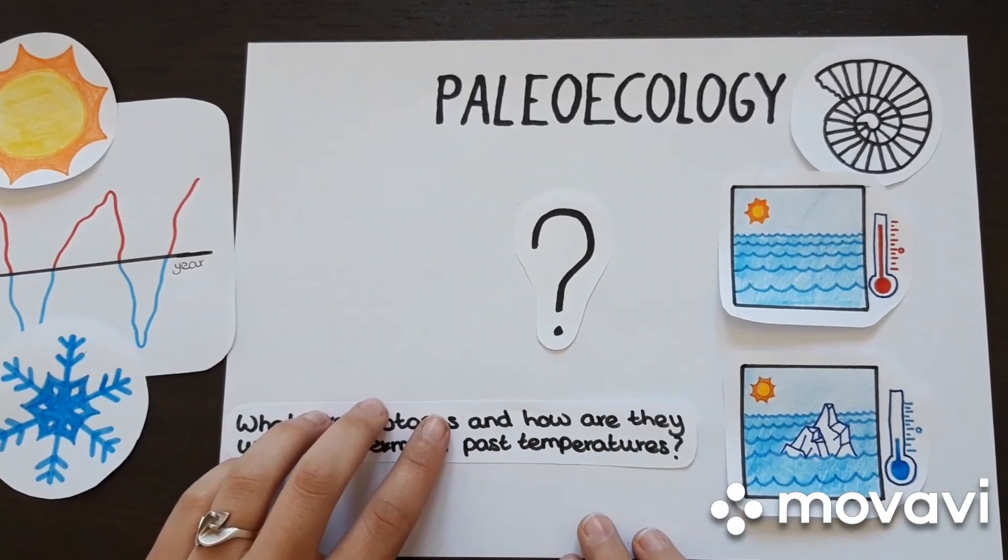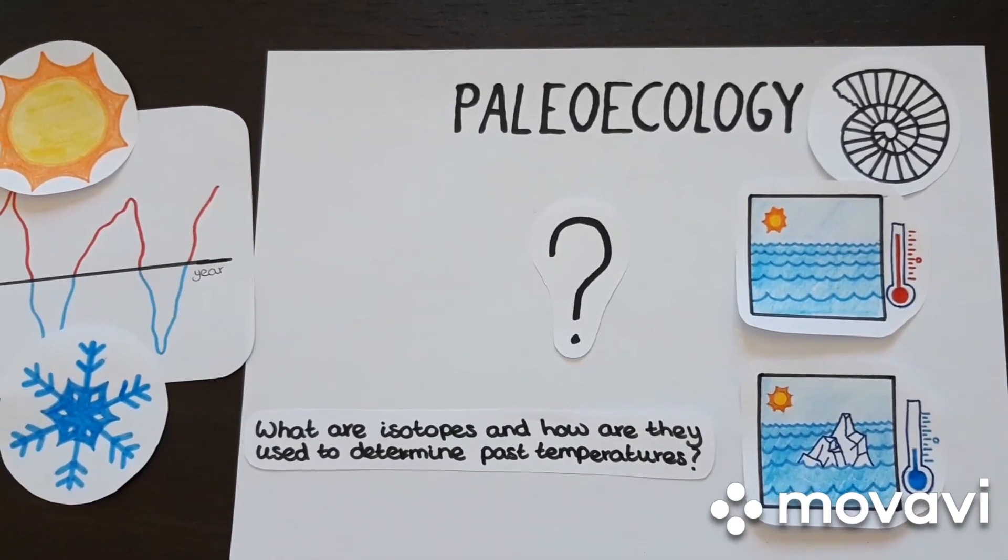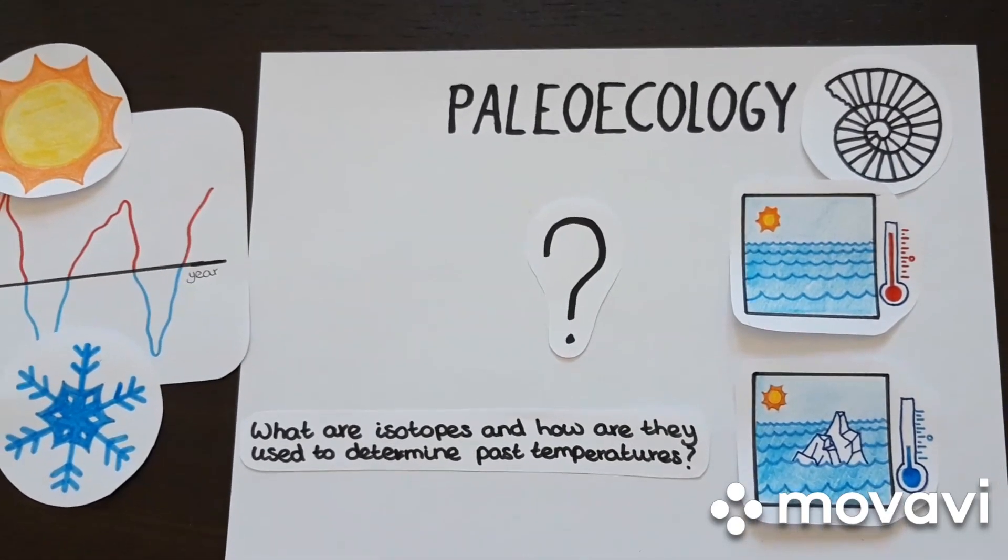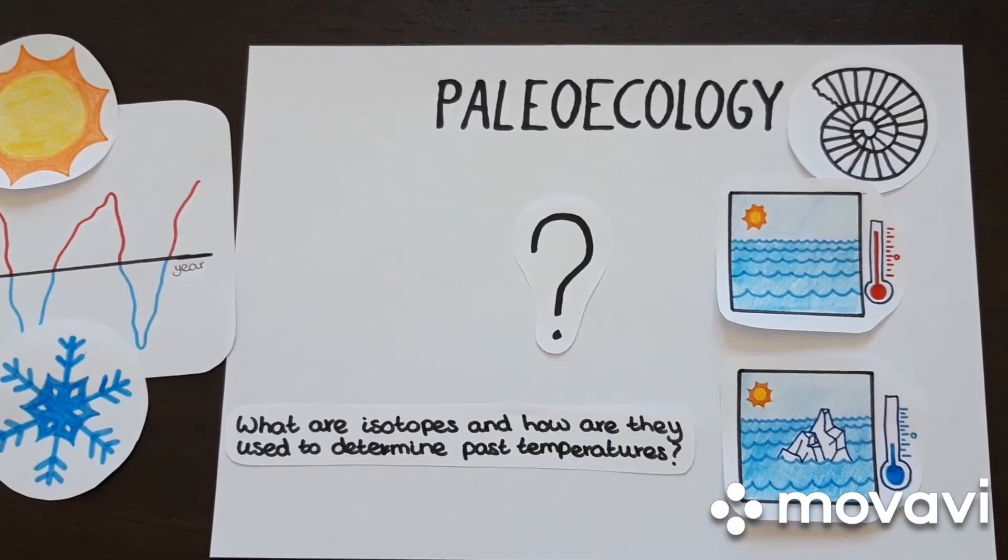For this, oxygen isotopes are used. In this knowledge script we explain what isotopes are and how they are used to determine past temperatures.